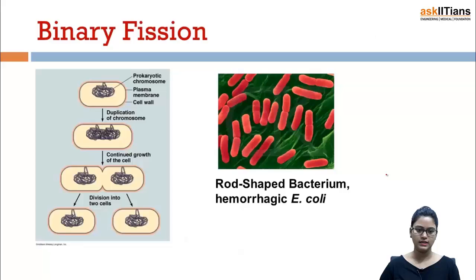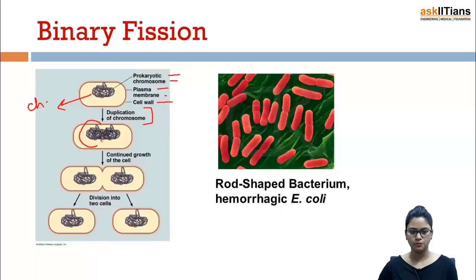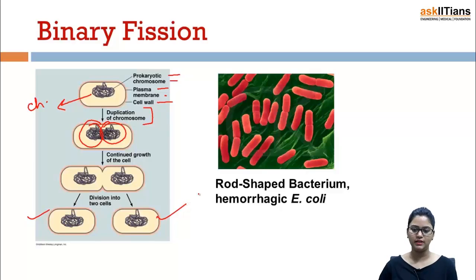Here you can see a prokaryotic chromosome and how binary fission is happening inside the cell. This is the prokaryotic chromosome, plasma membrane, and cell wall. This chromosome is getting duplicated. The duplication of the chromosomes occurs, the growth of the cell continues, and then division takes place. This is how binary fission happens — for example, in rod-shaped bacterium E. coli.